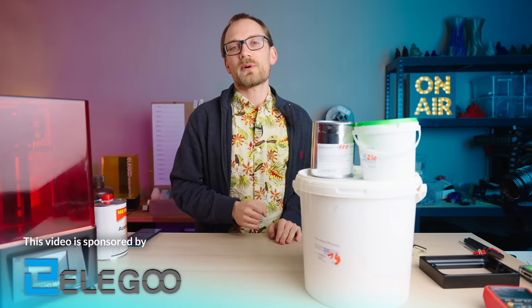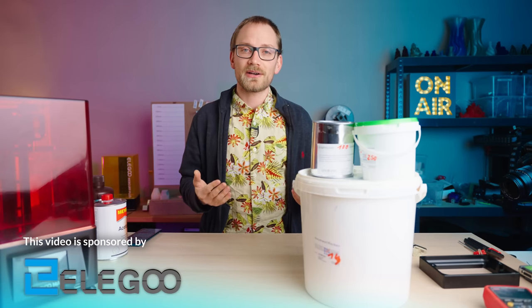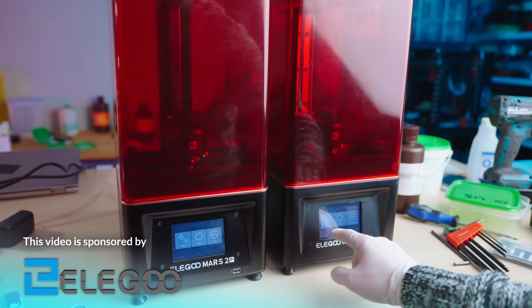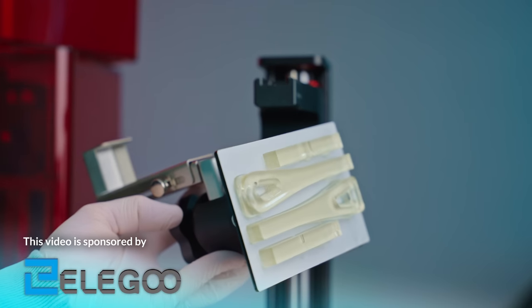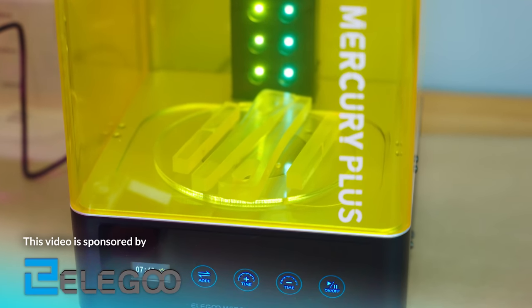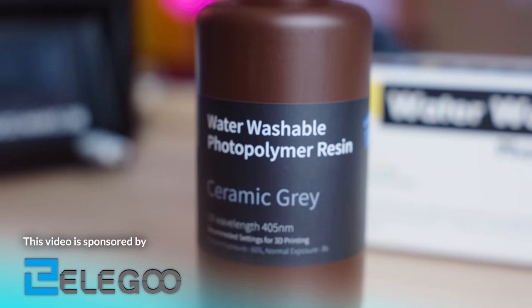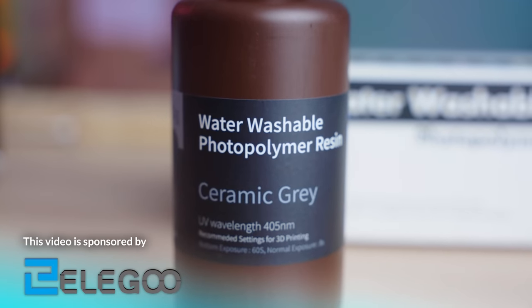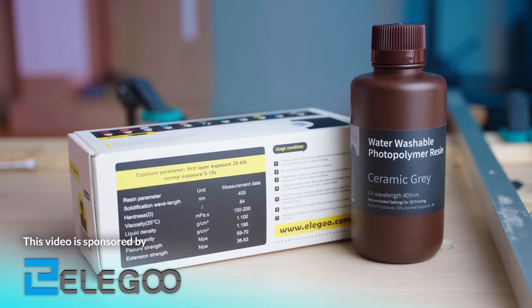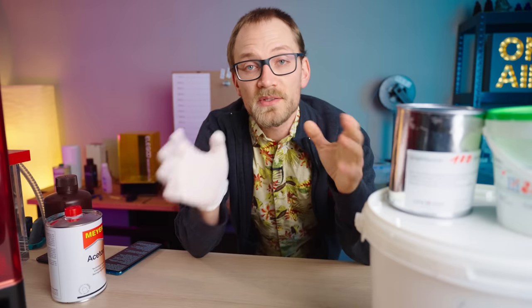Thank you to Elegoo for sponsoring this video. Doing these sorts of experiments always comes with the risk of breaking things, so it's great to have a bit of backup there. I'm using the Elegoo Mars 2 Pro and the Mercury curing and washing station, which is a fantastic combination. If I had used Elegoo's water washable resin, cleanup after the experiments would've been a lot easier too, when you can just use water instead of isopropanol to get things clean. Check them out at the link below.